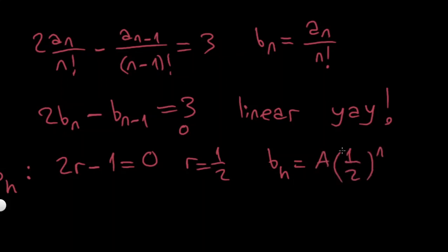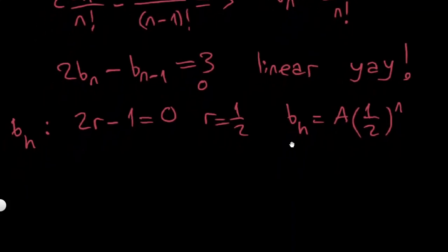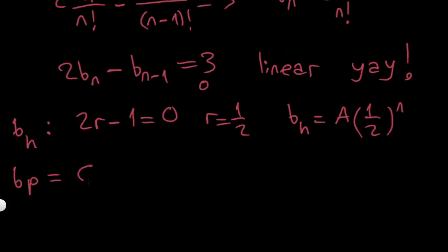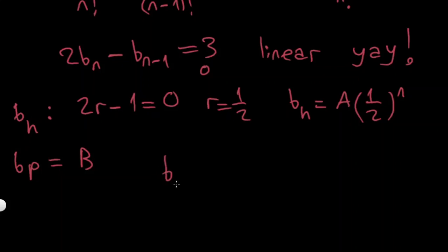I have only one root so I only have one constant. For the particular solution, I have 3 on the right-hand side, so we can just guess it's going to be a constant — let's say b. So my general solution of b_n is going to be a times (1/2)^n plus b.